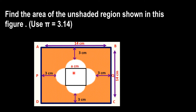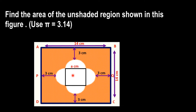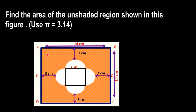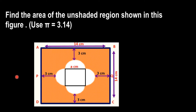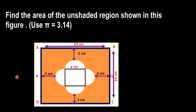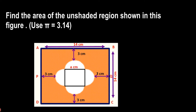In order to find the area of this unshaded region, we have to find the area of the square and these four semicircles. To find area of the square and semicircles, we need the measurement of its sides and for the semicircle we need the measure of its radius.